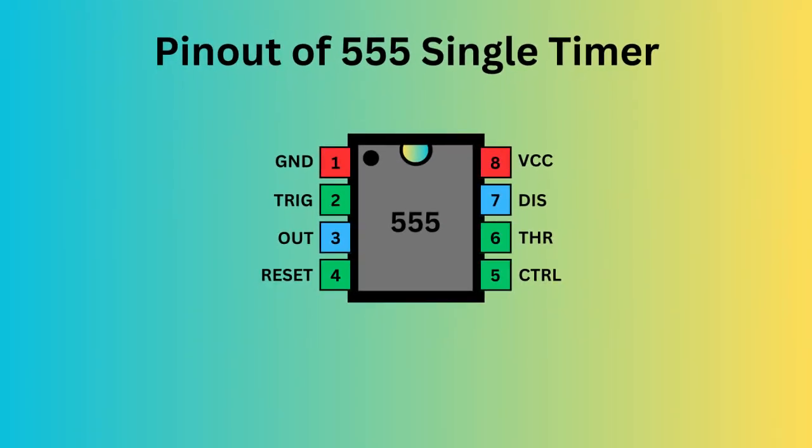The 555 timer IC comes with eight pins. There is a notch or a dot on the chip's body. Pin 1, located at the top left, serves as the ground or ground supply.